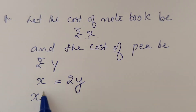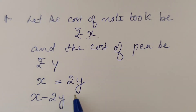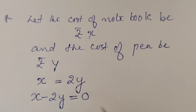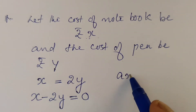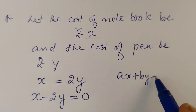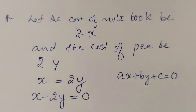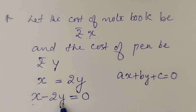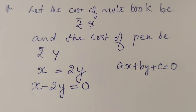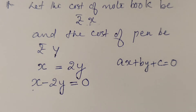Transposing to standard form, x minus 2y equals 0. The constant term is 0, so we write x minus 2y plus 0 equal to 0. This fits the standard form ax plus by plus c equal to 0 for a linear equation in two variables. Now the second question is: